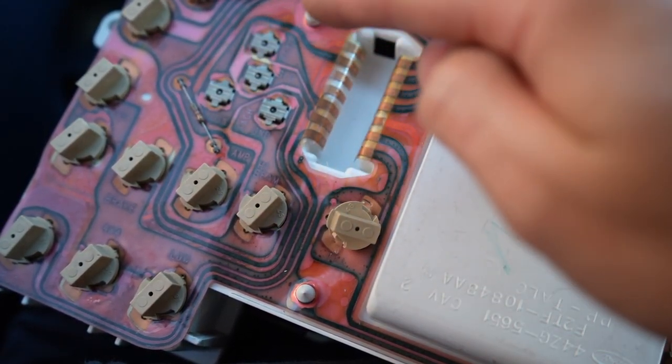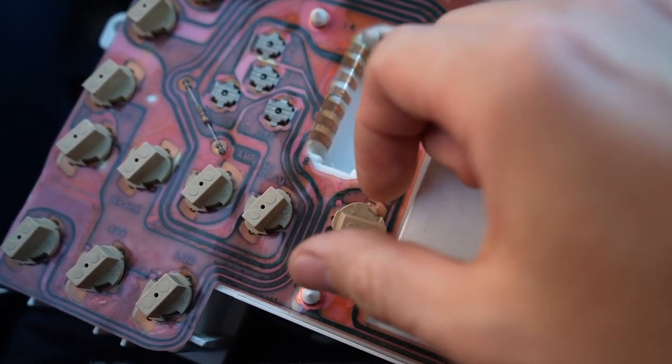Now, mind you, if the trace is damaged, you'll never find it. But, it's probably fine. Most gauge clusters have pretty easy circuitry to figure out what's going on.